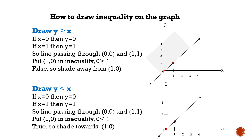Put (1, 0) in the inequality. x equals 1 and y equals 0, so 0 less than or equal to 1, which is true. So shade towards (1, 0).